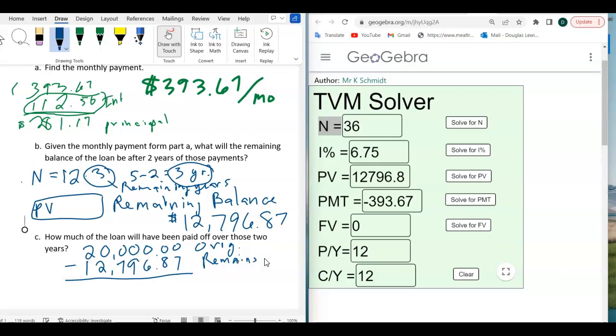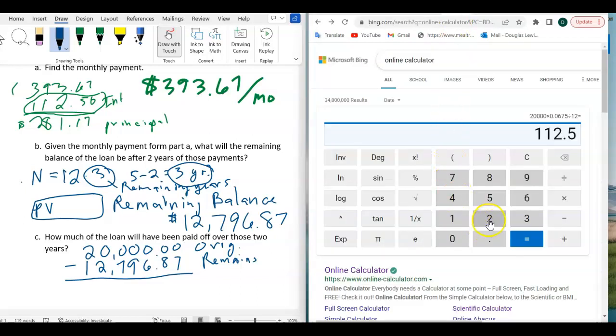And if this is the original, and this is what remains, then the difference between those two is what must have been paid off. So we'll take the $20,000 minus that, $20,000 minus the $12,796.87. And that means the only, if this is what's left over, we must have paid $7,203.13 has been paid, already paid.